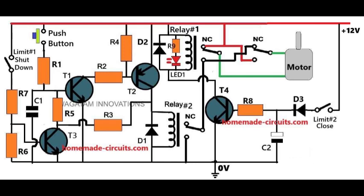With limit number 1 no longer pressed, T1 and T2 can finally latch, ensuring relay number 2 stays on even after the push button is released. The motor continues running until the door reaches its fully open position. At this point, the door mechanism presses limit number 2, triggering the next stage.